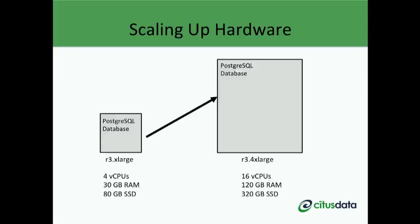The simplest way to scale is known as vertical scaling. In this approach, you simply go and buy a bigger machine. For example, we have a PostgreSQL machine with four virtual CPUs, 30 gigs of RAM, and 80 gigs of SSD, and we migrate our database to a machine with four times the hardware resources across all dimensions.